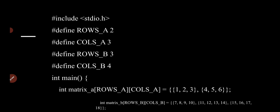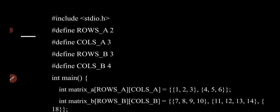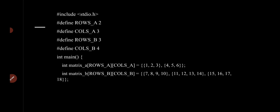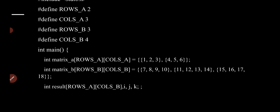Likewise we are defining the next matrix B. Integer B[ROWS_B][COLS_B]. The values assigned show 3 rows — first row is 7, 8, 9, 10; second row is 11, 12, 13, 14; and there is a third row with further values. So there are 3 rows and 4 columns. B matrix is 3 by 4 and A matrix is 2 by 3. Integer result[ROWS_A][COLS_B] — the answer matrix has rows from A and columns from B.